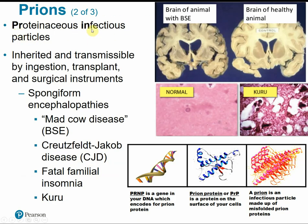Prions are proteinaceous infectious particles. We know they are protein-based because their infectiousness is decreased when treated with a protease enzyme, but not affected by radiation, suggesting there is no actual genetic material — it's pure protein. Prions may be inherited or transmitted by ingestion, transplant, or surgical instruments. They all share the same symptoms and cause neurological disease — specifically spongiform encephalopathy, where large vacuoles or holes form in brain tissue giving it a spongy appearance. Mad cow disease is the most well-known prion infection, known as bovine spongiform encephalopathy. Other examples include Creutzfeldt-Jakob disease, fatal familial insomnia, and Kuru.